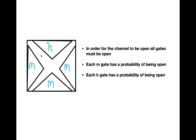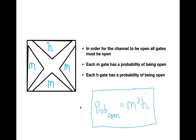Each of these gates is independent of the others, meaning if one M-gate closes, another M-gate can still be open. Each gate has its own probability of being open, and in order for the channel to be open, all four gates must be open. We can calculate the probability of a voltage-gated sodium channel being open by multiplying the individual probabilities of each gate being open — the probabilities of all three M-gates multiplied by the probability of the H-gate, each at a given voltage.